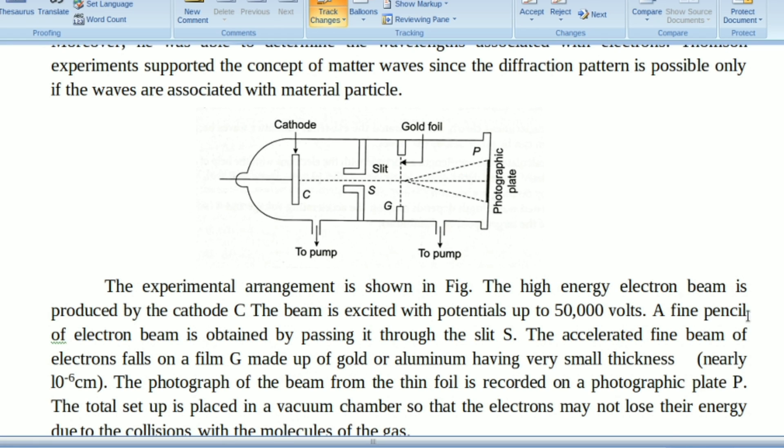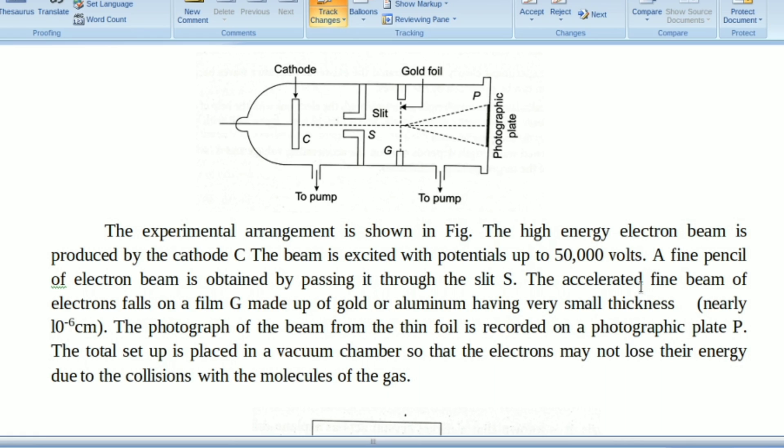A fine pencil of electron beam is obtained by passing it through the slit S. The accelerated fine beam of electrons falls on a thin film G made up of gold or aluminum having very small thickness.